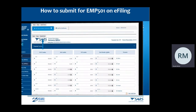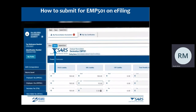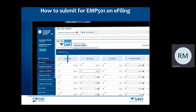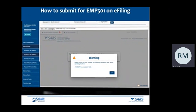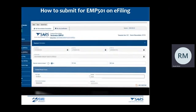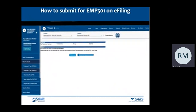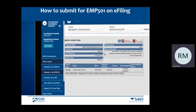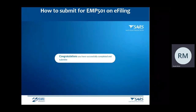Once you have completed both the EMP501 declaration and all the IRP5/IT3A certificates, you may use the Save option to save your return if you wish to edit or submit it later. Alternatively, you may submit your return by clicking Submit Form. If a mandatory field was not completed, you will get a pop-up message notifying you to complete the field. Complete the mandatory fields and click Submit Form. Carefully read the declaration and then click Agree. Your return will be submitted. Click Continue — this will take you to the EMP501 work page. The status of your return will now be displayed as Filed through eFiling. Congratulations! You have successfully completed and submitted your EMP501 declaration on SARS eFiling.